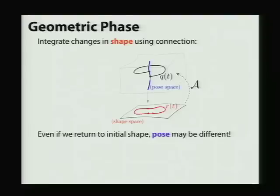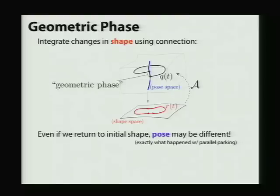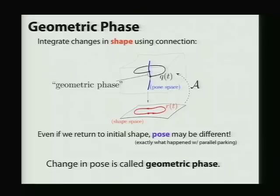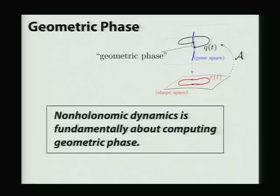So in the case of parallel parking, even if our steering wheel is in the same position when we're in the parking spot as when we started, the car has actually moved. And this difference in our pose is called the geometric phase. And this is really what non-holonomic systems are about. So if you really want to go out and simulate all the phenomena you see in the real world, you're going to have to figure out how to compute this geometric phase, because not all real physical systems are holonomic.